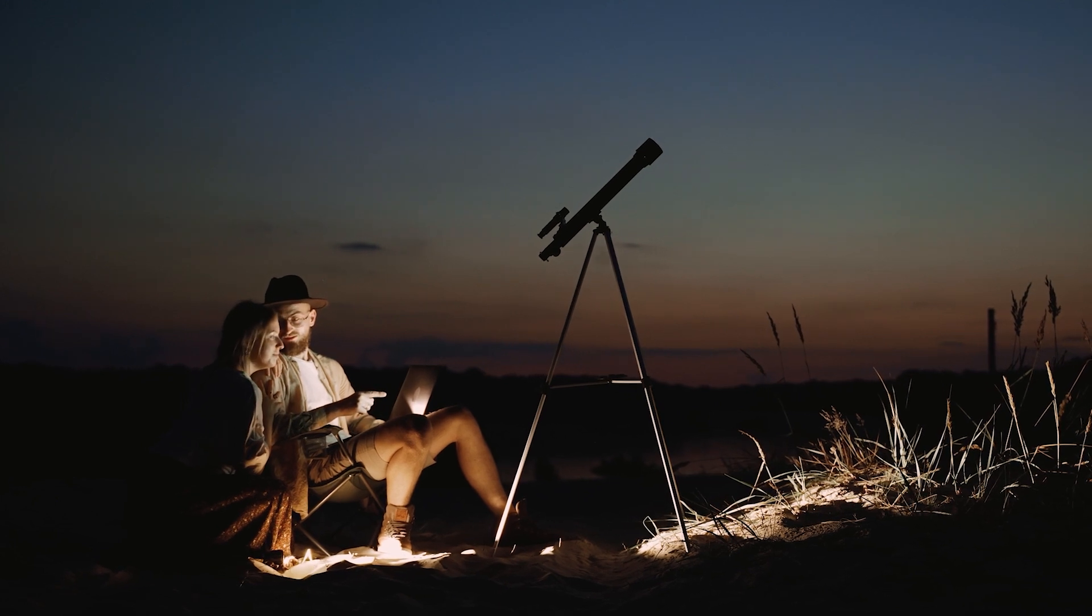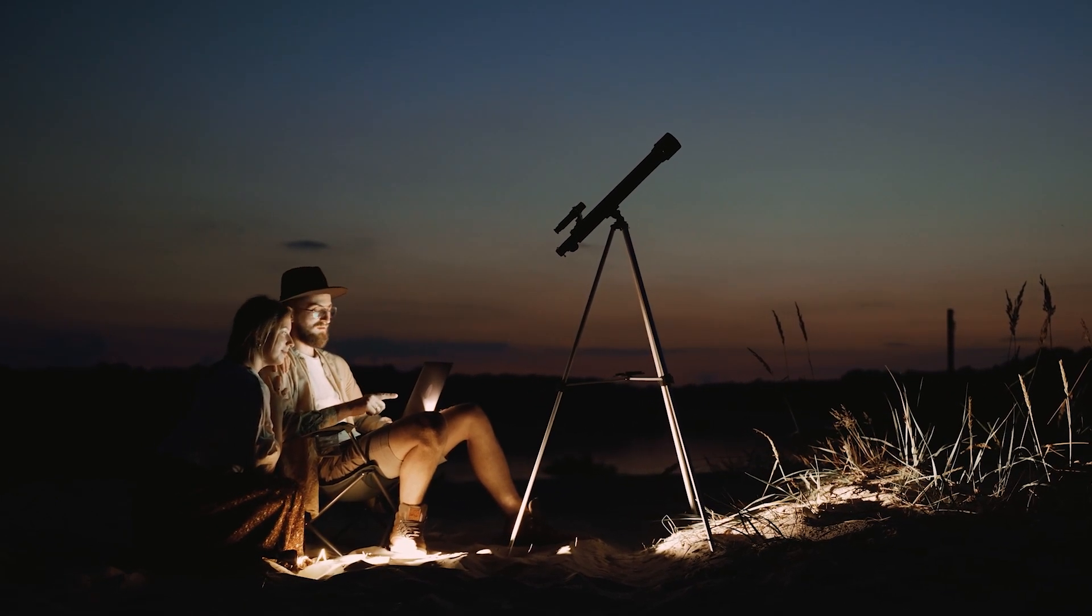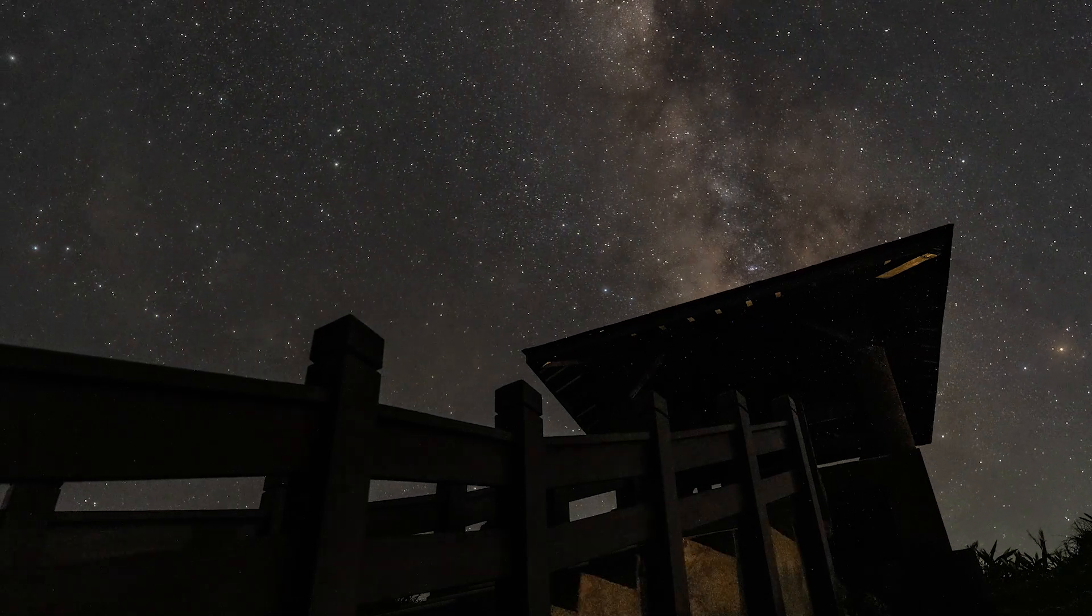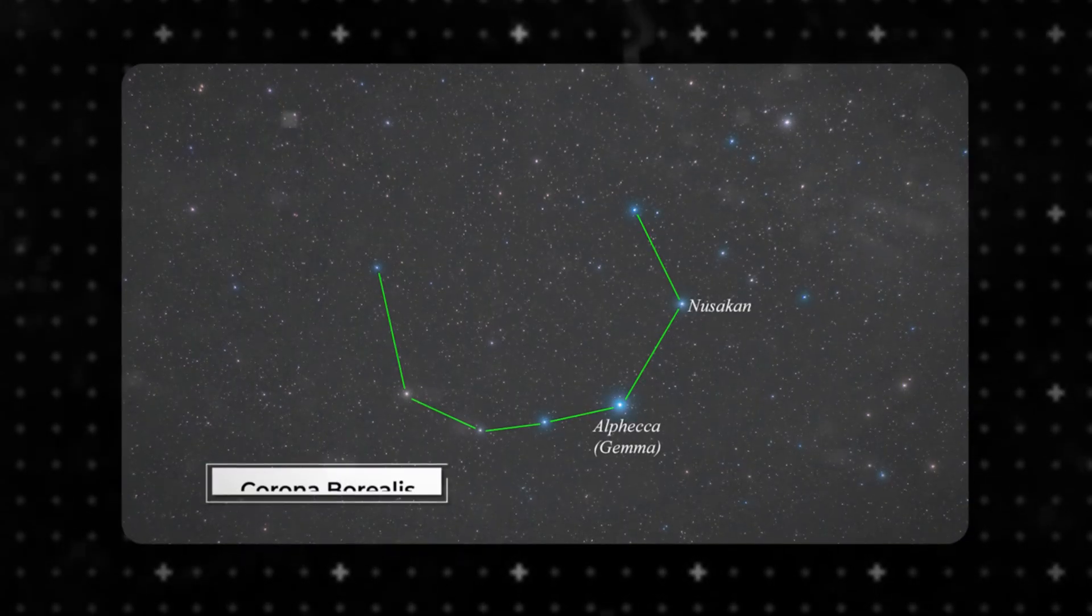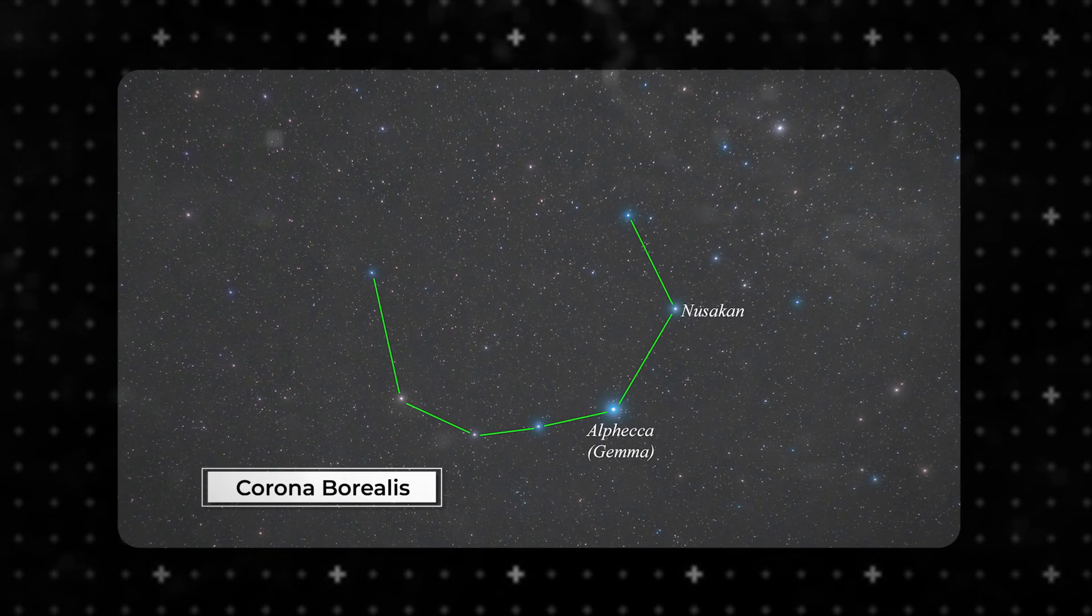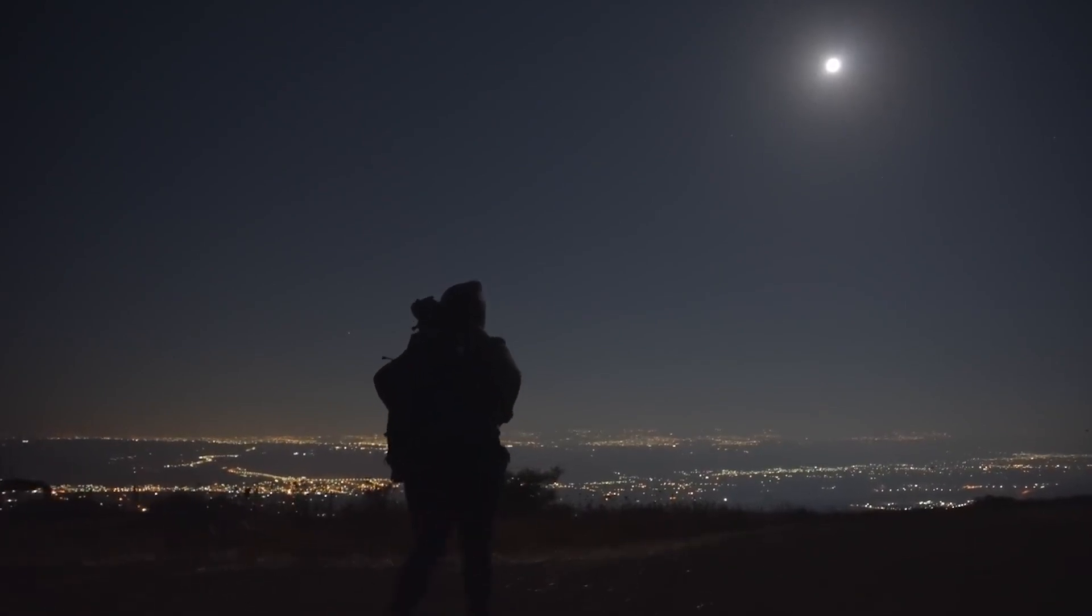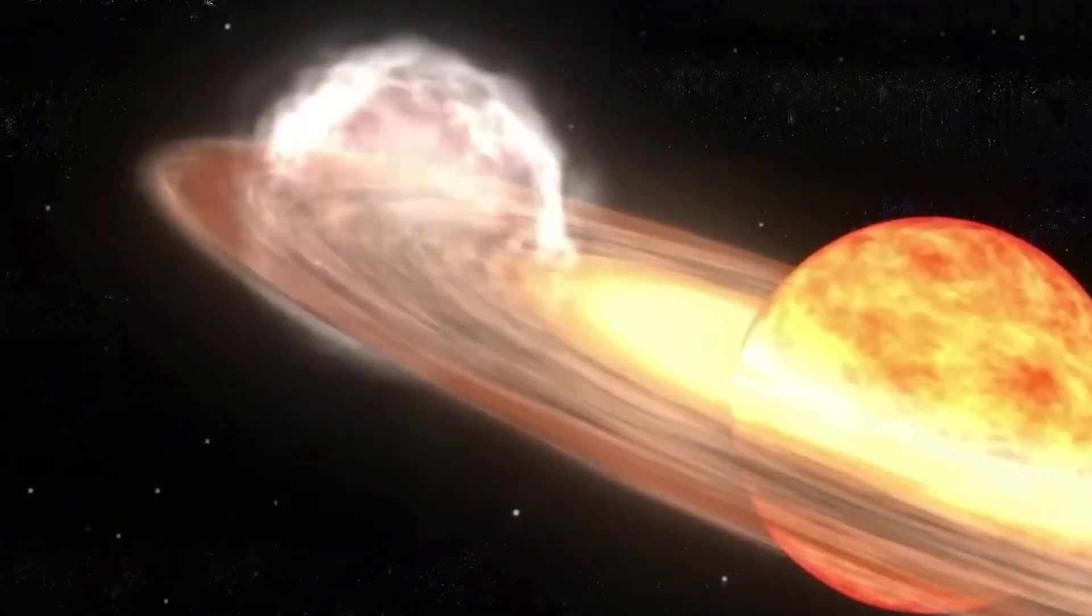Don't think that in order to witness this cosmic event, telescopes or complex instruments are needed. It's much simpler than that. On a clear night, all you need to do is step outside, find the constellation of Corona Borealis. It's easily recognizable by its arc-like shape, resembling a crown, and direct your gaze in that direction. Right there, at any moment, a rare nova burst could happen.